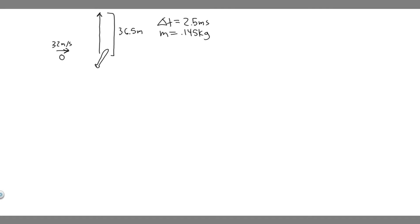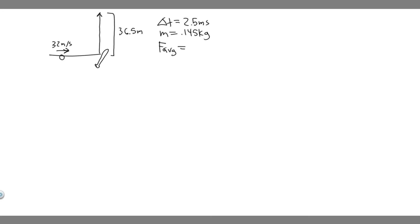What we're trying to find is the average force. In this problem, when they say the average force, keep in mind this is going to be a vector since there are two different directions — so there's going to be a magnitude and direction. What we're going to have to do is find the average force in the y and the average force in the x, and then take the resultant.